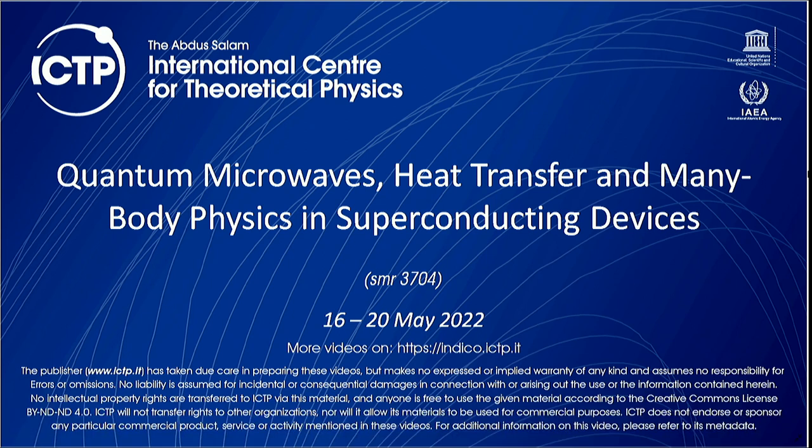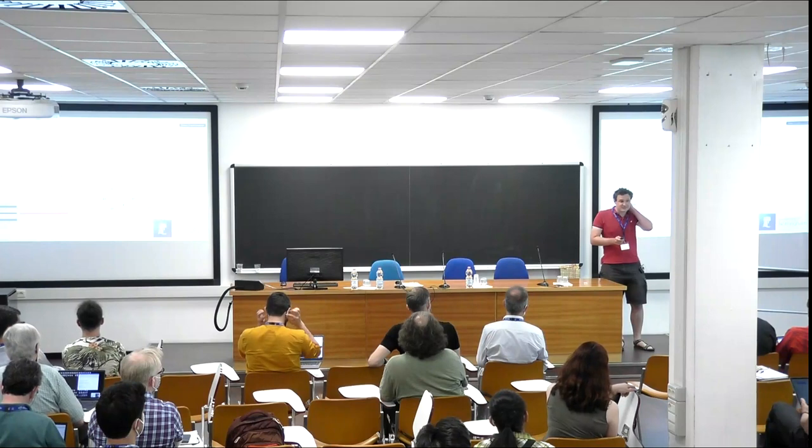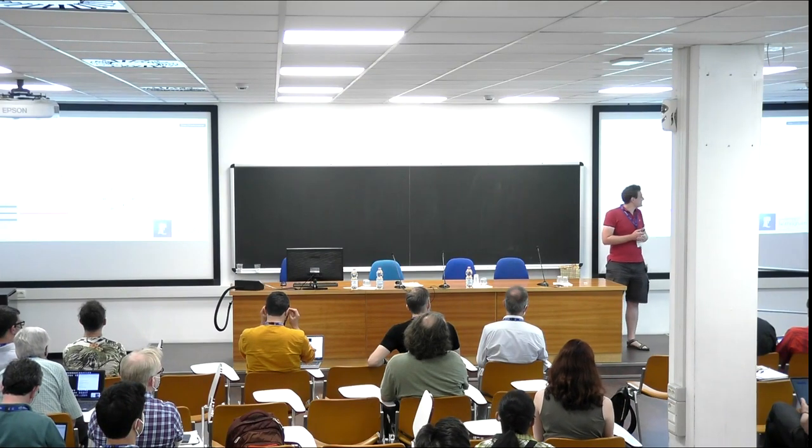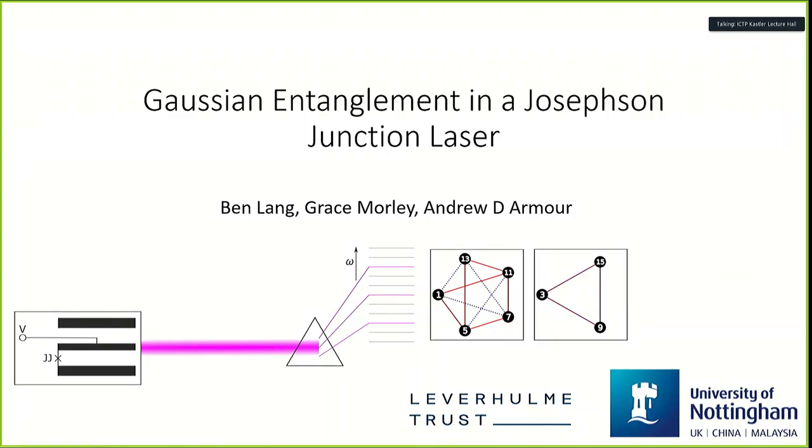Okay, perfect. Thank you. Hello, everyone. My name is Ben. I'm going to be continuing to talk about the same sort of thing we've heard in the last couple of talks. I'd like to thank the organizers for not only organizing this but also allowing me to talk just after a couple of people have done the perfect introduction of the sort of material I'm going to be talking about. I've been working with Andrew Armour and Grace Morley at Nottingham on Gaussian Entanglement in a Josephson Junction Laser.